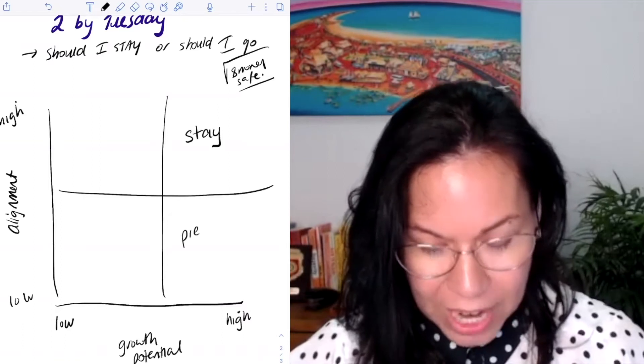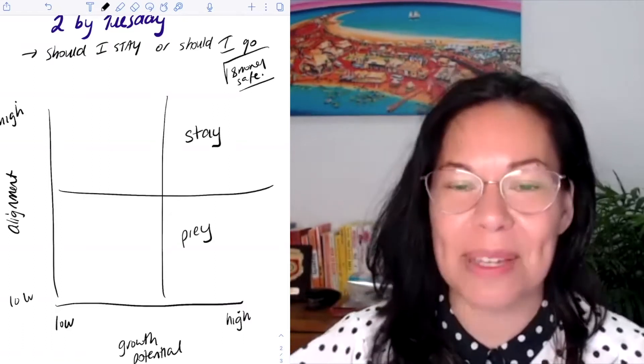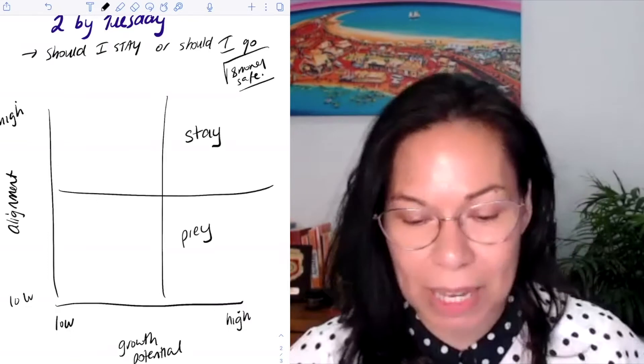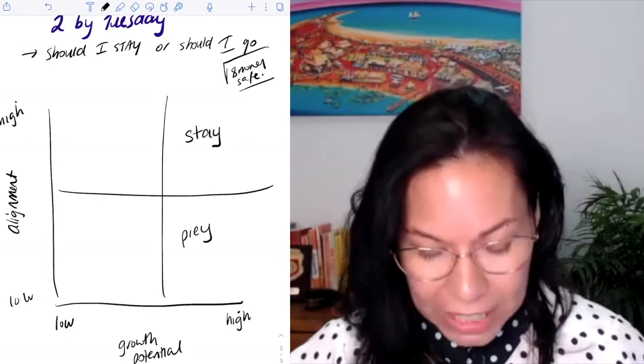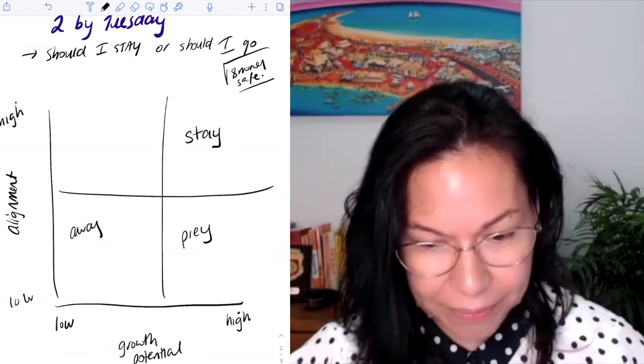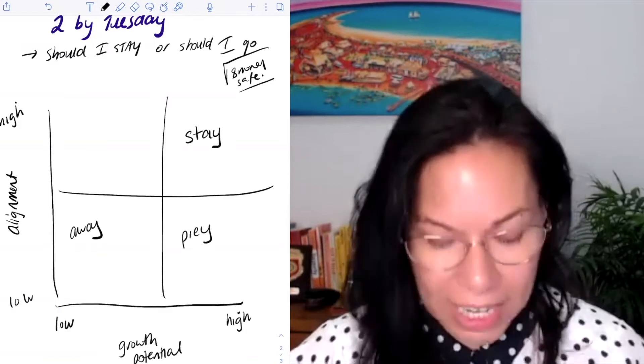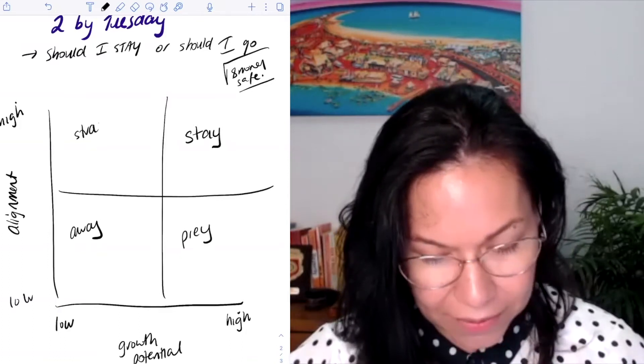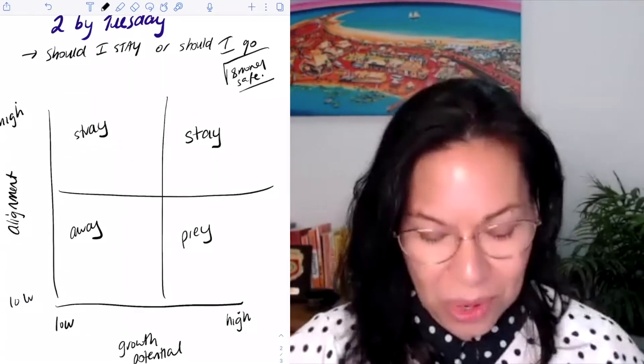Bottom right is pray—not pray, but P-R-E-Y. I'll explain more in a second. Bottom left is away. And top left is stray. Let's talk through what these are.